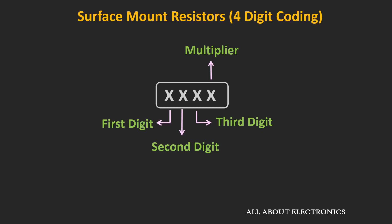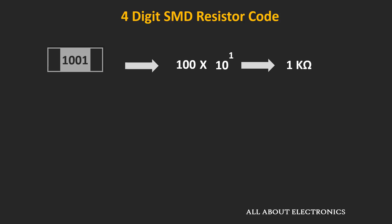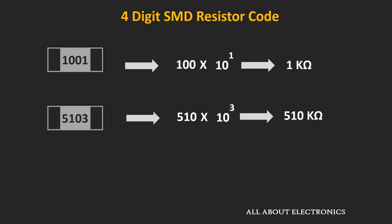Let's take some examples for the four-digit coding scheme. If the code written on the surface mount resistor is 1001, the value would be 100 × 10¹, which equals 1 kΩ. Similarly, for the code 5103, the value would be 510 × 10³, which equals 510 kΩ.